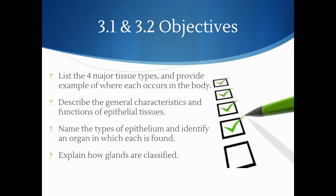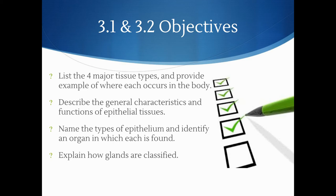In sections 3.1 and 3.2, we have four objectives. By the end of this section, you should be able to list the four major tissue types and provide examples of each where they occur in the body, describe the general characteristics and functions of epithelial tissues, name the types of epithelium and identify an organ in which they are found, and explain how glands are classified.